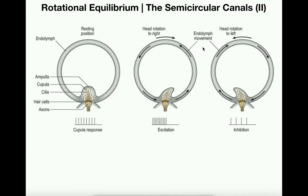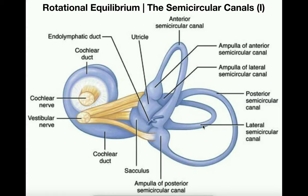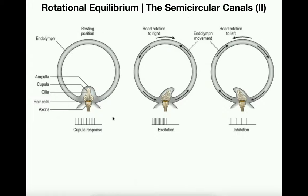Now let's look at an actual example. This is specifically the lateral semicircular canal, also called the horizontal semicircular canal. The lateral or horizontal semicircular canal detects rotations in the transverse plane — so if you rotated your head to look to the right and to the left, basically shaking your head no, rotating it left and right, that's in the transverse plane, and this particular canal is going to detect that movement.